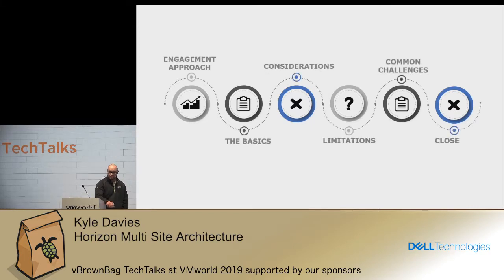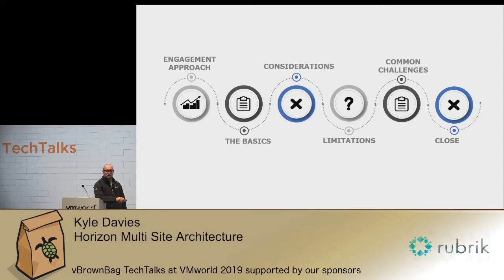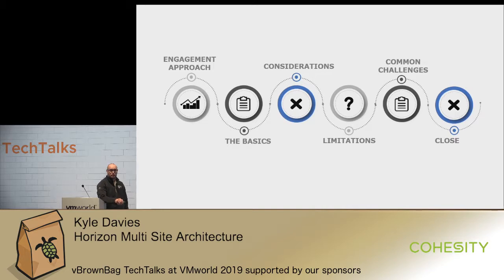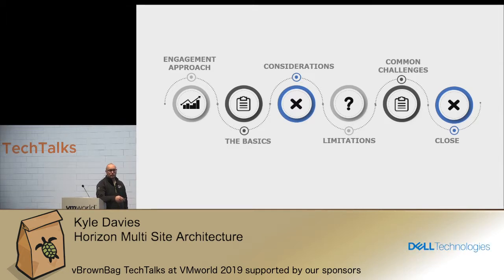The areas we're going to cover today: the engagement approach — the first thing we need to think about is how do we get you from A to B with minimal risk. Then we'll start talking around the basics of what is Cloud Pod architecture, how do we look to do a multi-site design, and what is a block and a pod. We've got some considerations, limitations, and we're also going to do some top tips at the end.